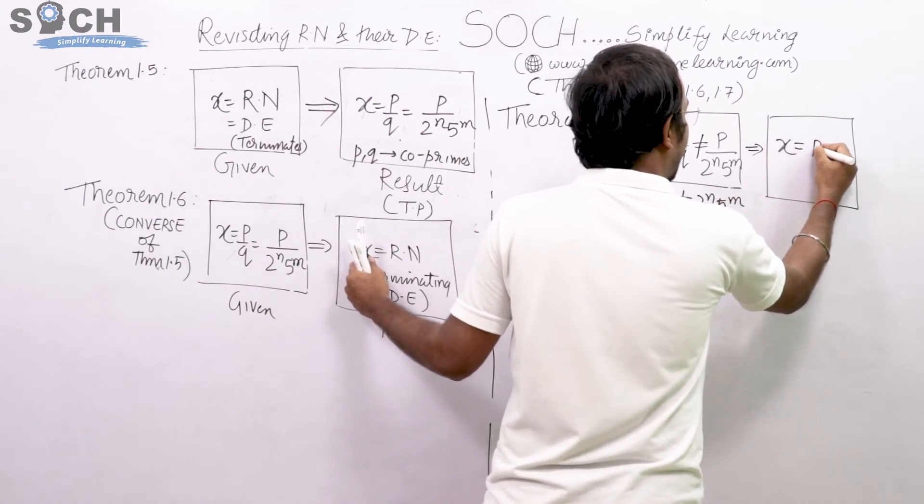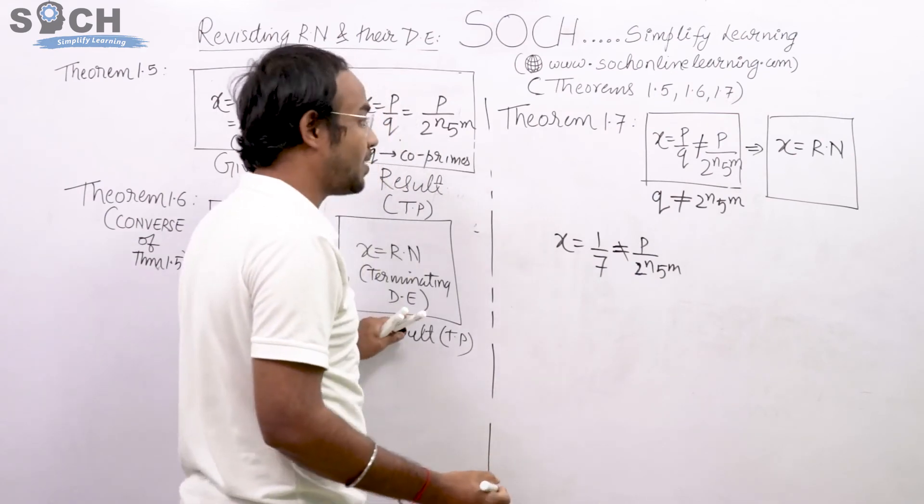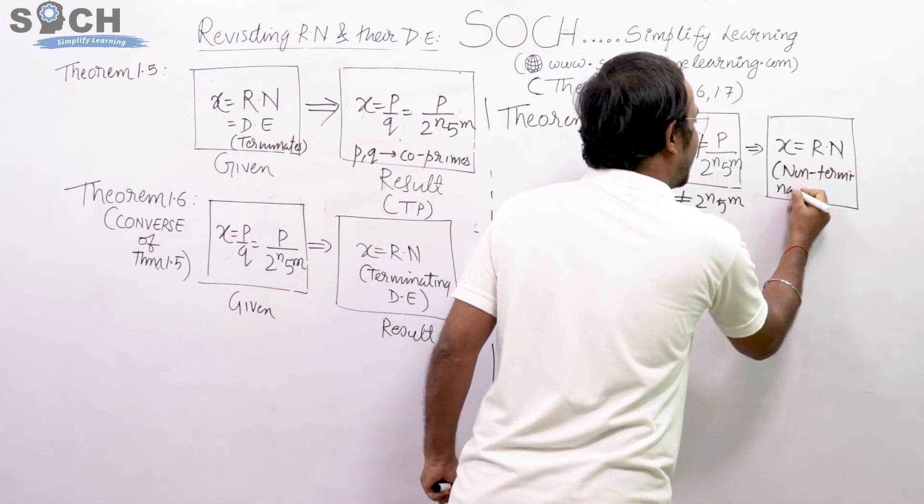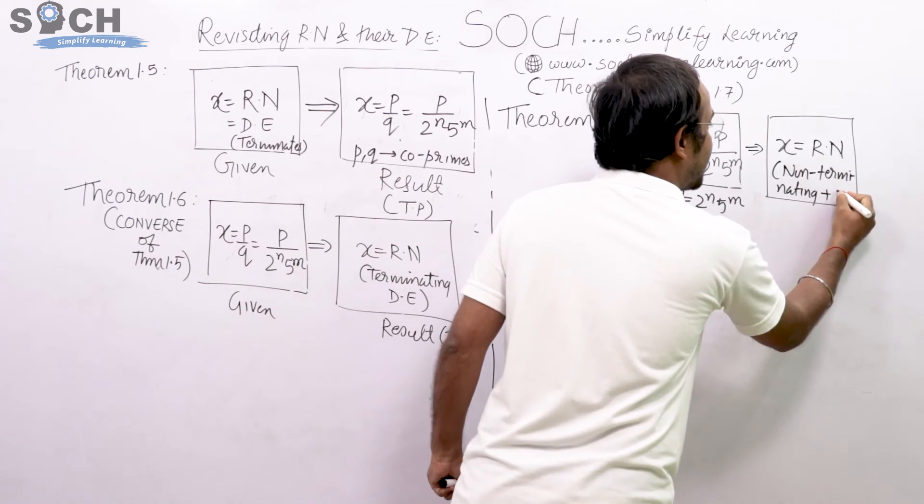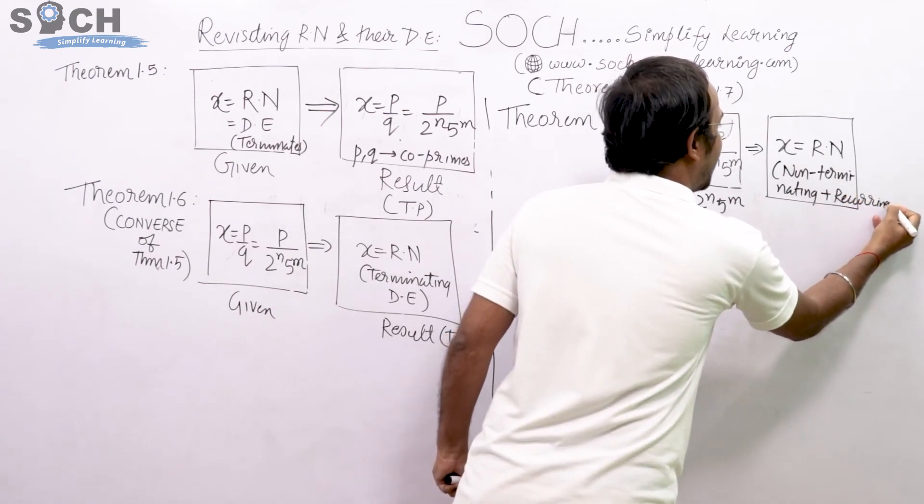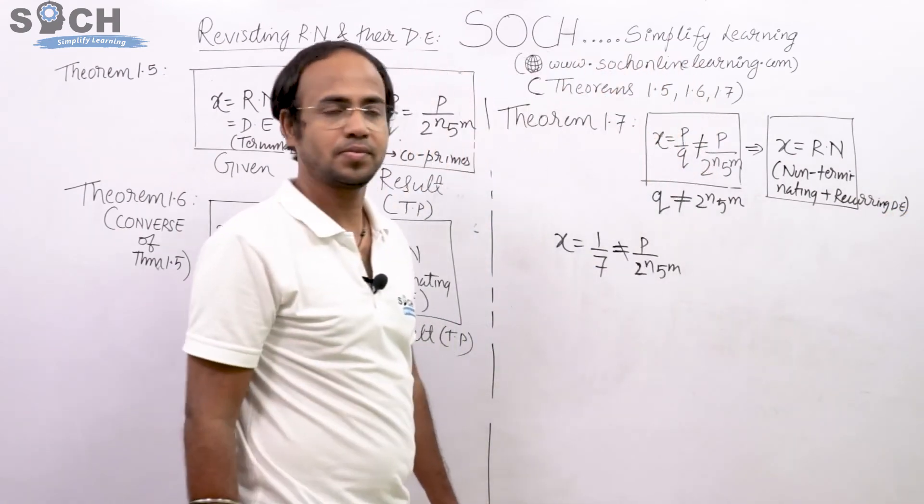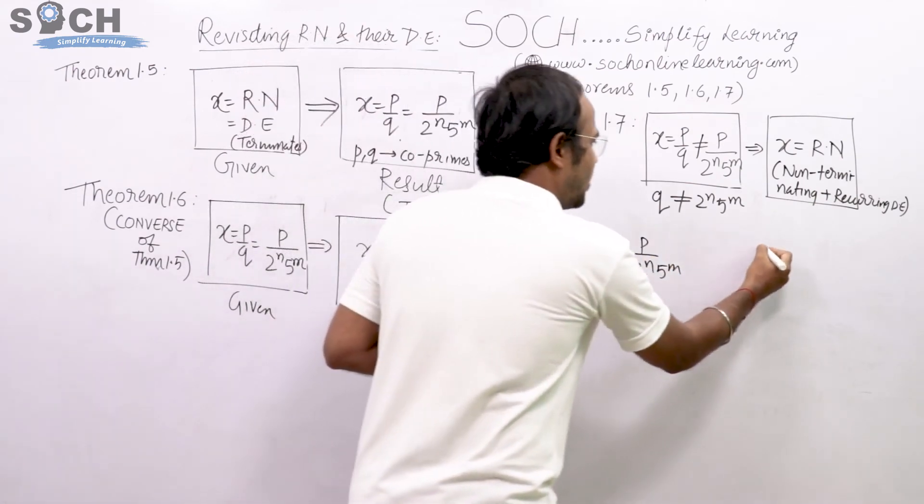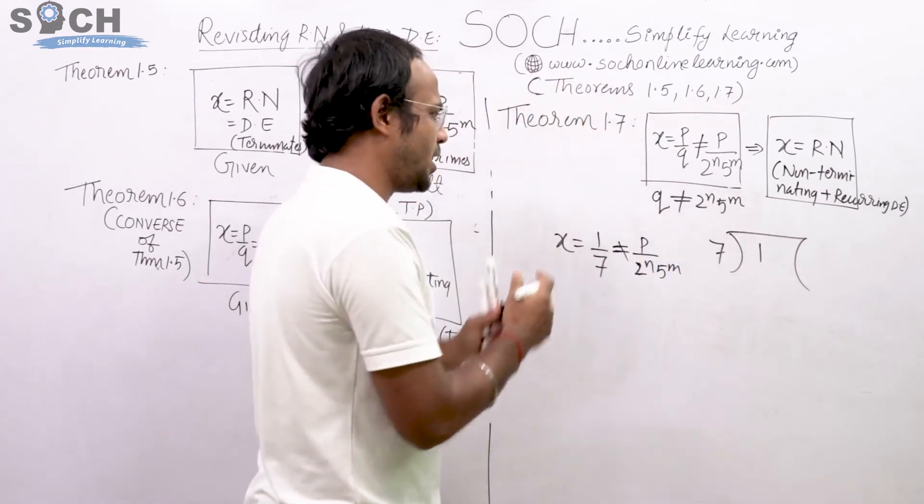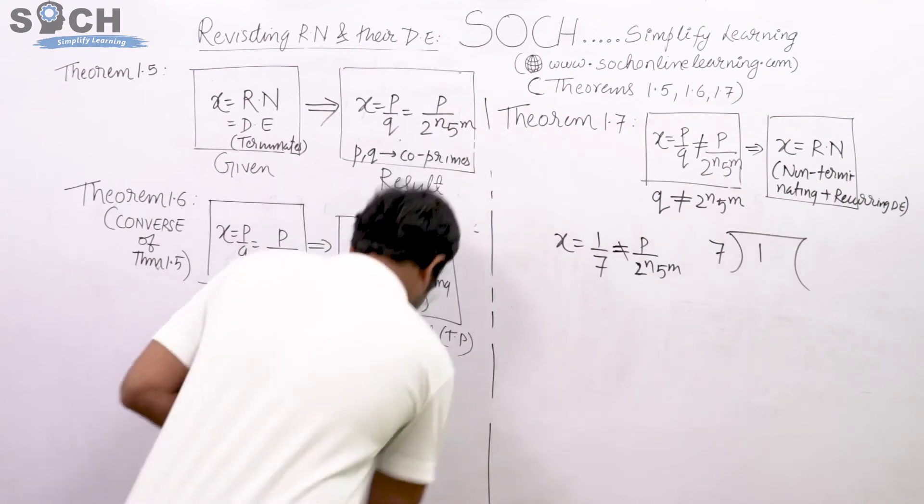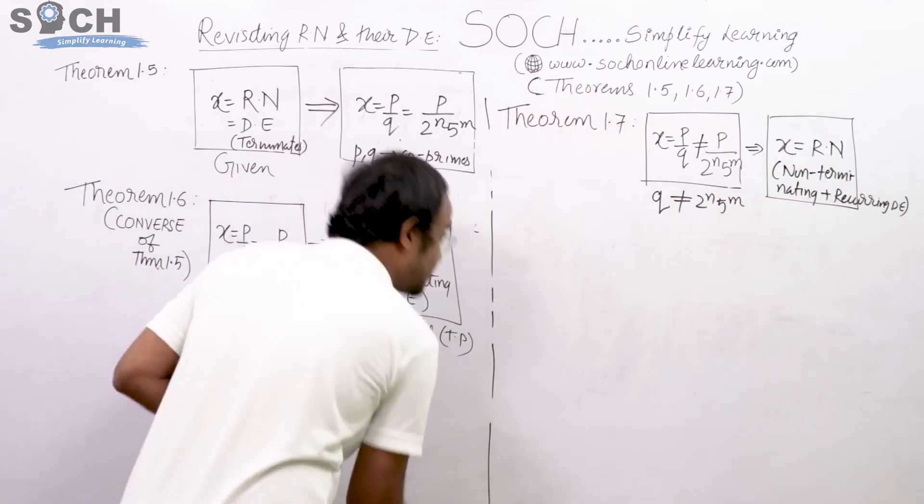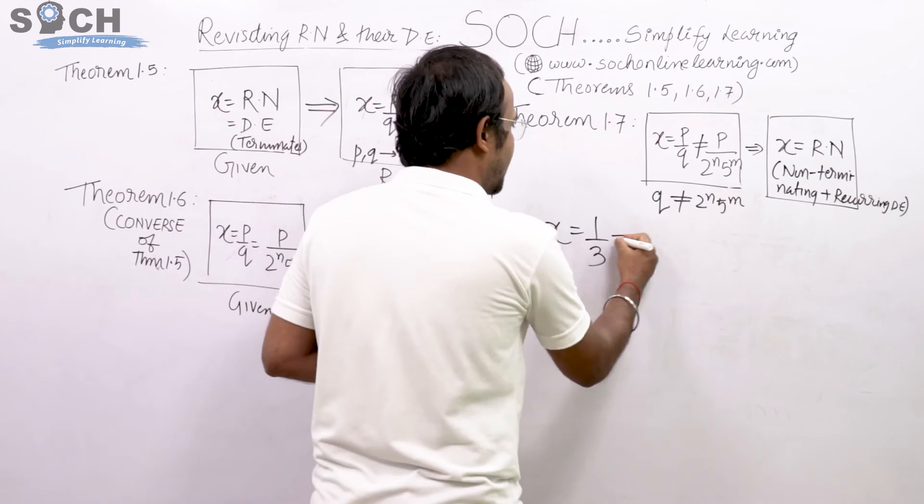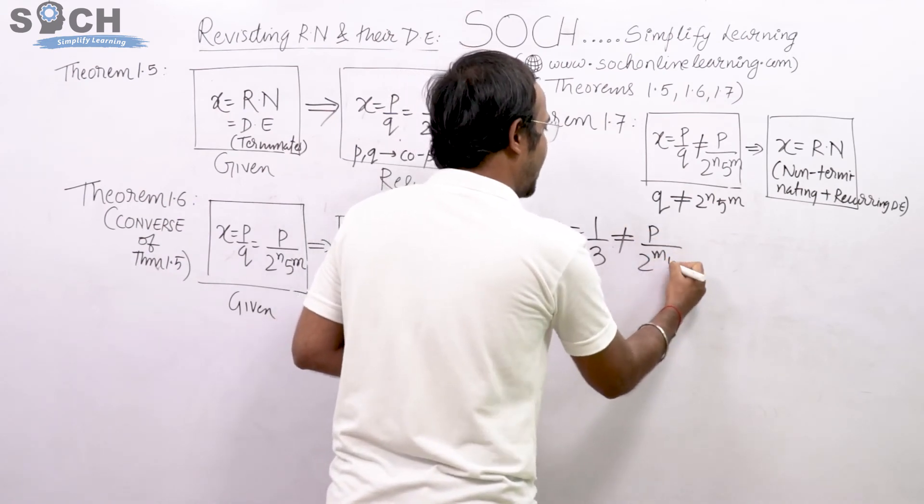I know that P would remain P but Q cannot be expressed as 2 raised to N and 5 raised to M form, because 7 ke table mein na 2 aata hai na 5 aata hai. Then we say this X is of course a rational number having what? Terminating decimal? No. This is having non-terminating and recurring decimal expansion. What I should understand from here, if I divide 1 by 7 it will go in a very long way. I rather take the example of 1 by 3.